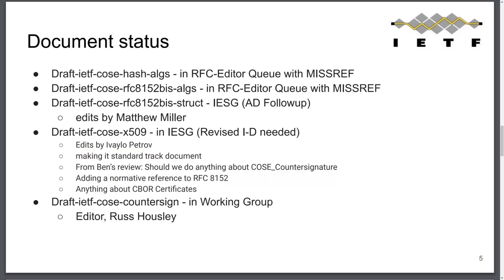Jonathan pointed out that a previous version referenced GitHub examples, but there were no X509 examples there. That reference text was removed in the latest version. However, Jonathan submitted a pull request to the examples repository with X509 examples. The link can be added back, and that is an action item.